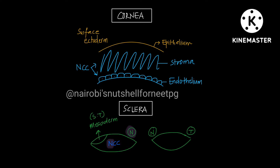Moving to the next two important parts: cornea and sclera. Cornea has outer epithelium, middle stroma, and inner endothelium. The epithelium of cornea we have learned is from surface ectoderm — the anterior-most thing. The next parts — stroma and endothelium — stroma has ST in neural crest, so stroma and endothelium are both from neural crest cells.